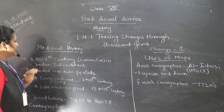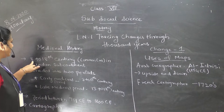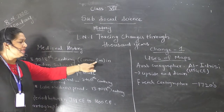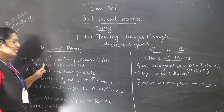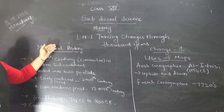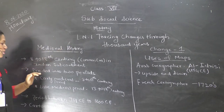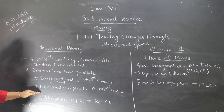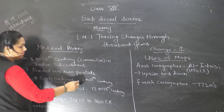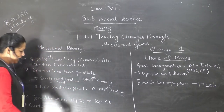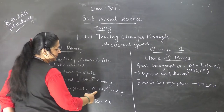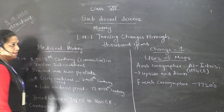The Medieval History period spans from the 8th to 18th century CE in the Indian subcontinent. This period was divided into two: the Early Medieval period from the 8th to 13th century, and the Late Medieval period from the 13th to 18th century.